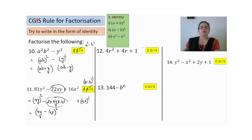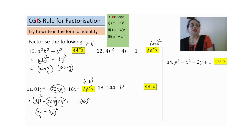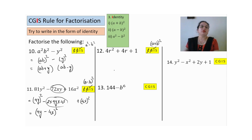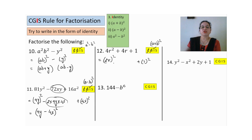Next sum — common not possible, grouping not possible, we use identity. Three terms, all positive, so (a+b)². These concepts are very very useful in higher classes, that's why I am taking more sums for practice. Write 4r² as (2r)² and the last term as 1². Middle term should be 2 × 2r × 1 = 4r. Check — same. So the identity is (2r+1)².